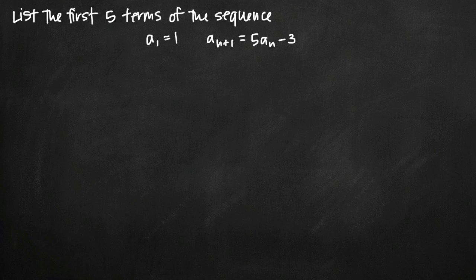Today we're going to be talking about how to list the first several terms of a sequence. In this particular problem we've been asked to list the first five terms given that a₁ = 1 and a formula for a_{n+1}, the n+1th term, which we've been given as 5a_n - 3.